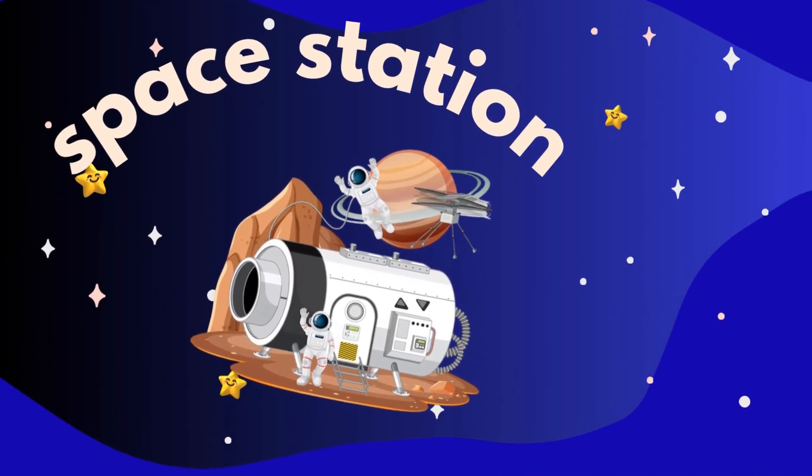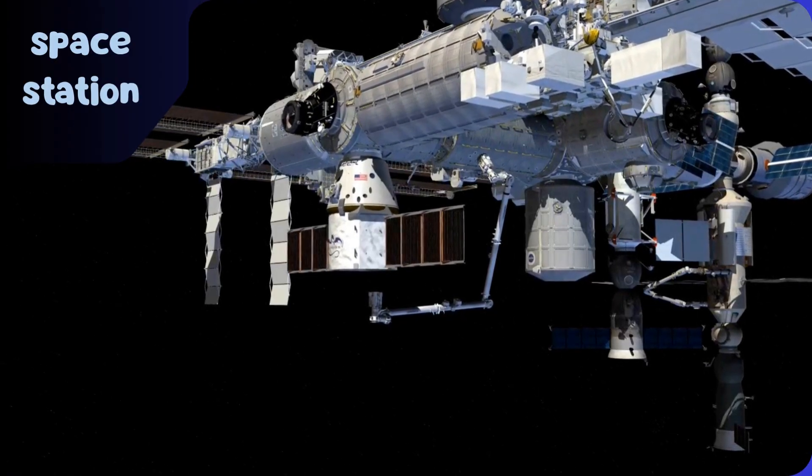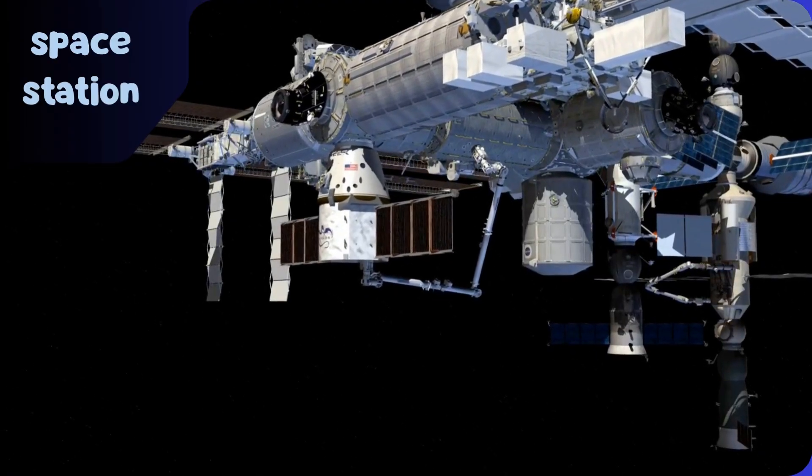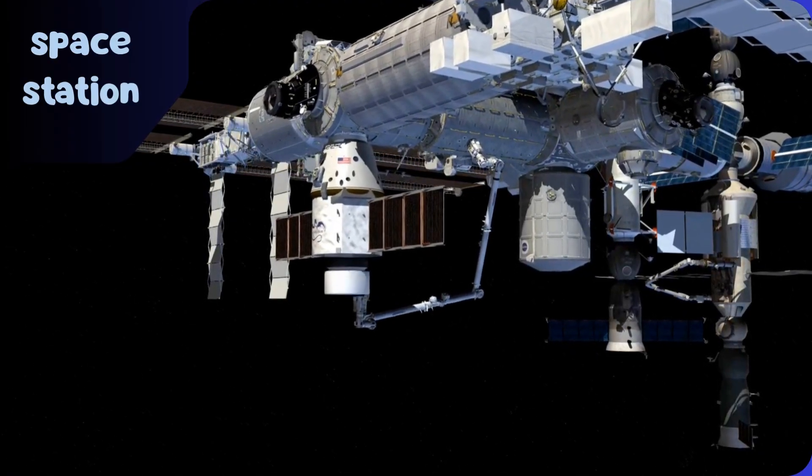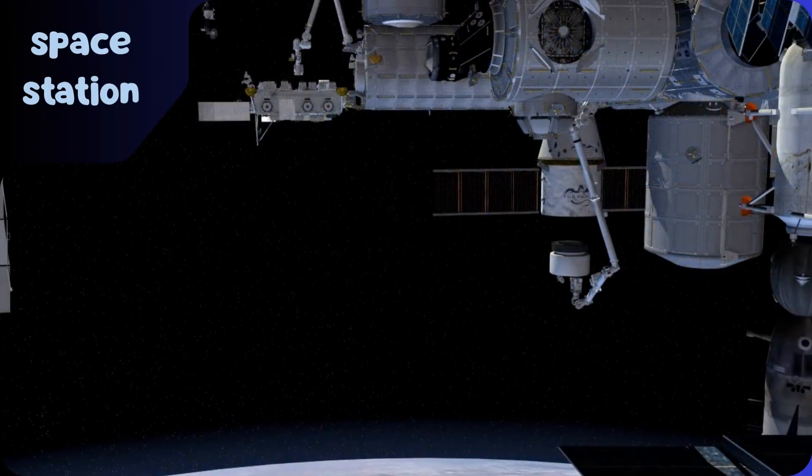There is a space station. Astronauts live and work here to learn about space. They float around because there's no gravity, eat space food and even grow plants.